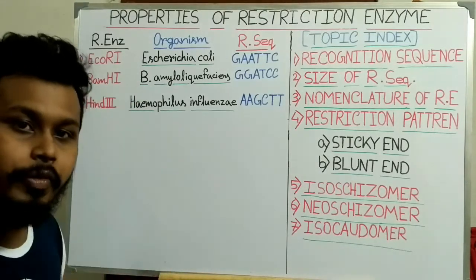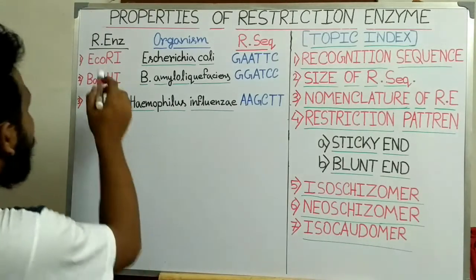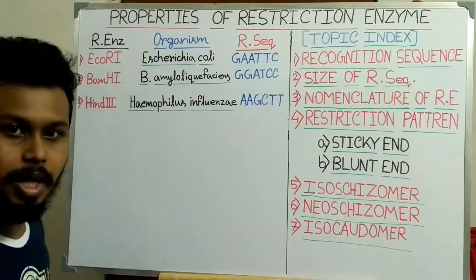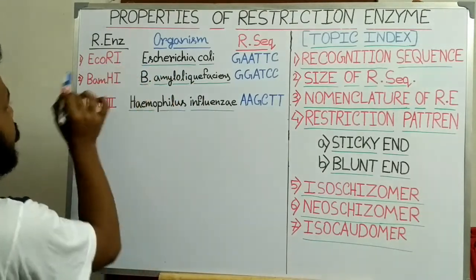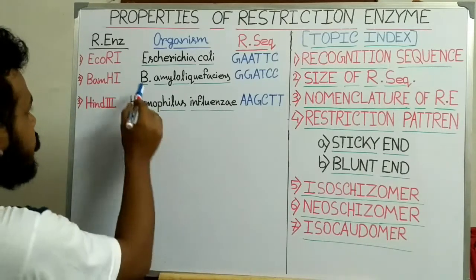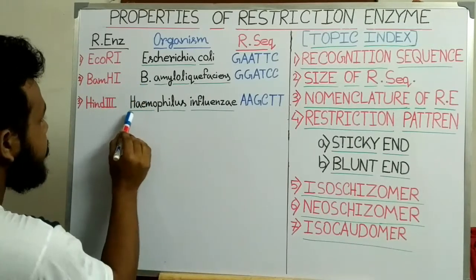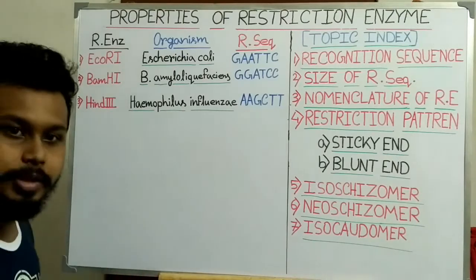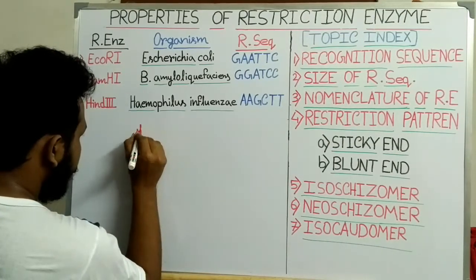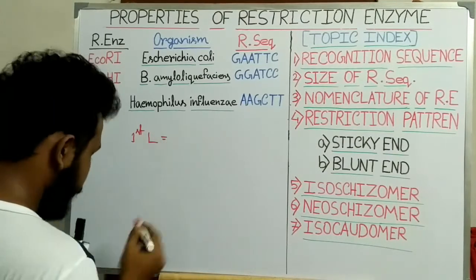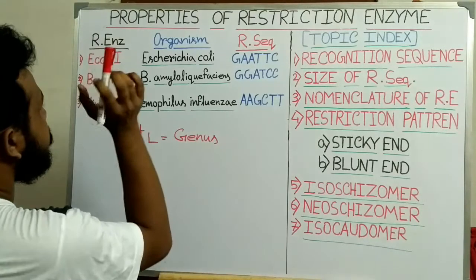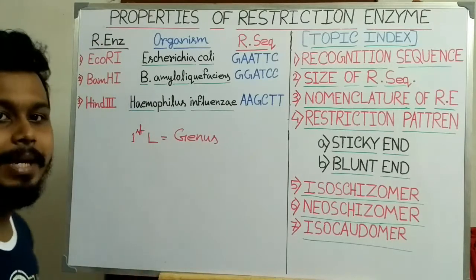This first capital letter signifies the genus name of the organism from which these restriction enzymes are isolated. For EcoRI, the organism is Escherichia coli and the genus name is Escherichia, so the first letter is E. For BamHI, B stands for Bacillus. For HindIII, H stands for Haemophilus. So the first capital letter signifies the genus name of the organism from which the restriction enzymes are isolated.